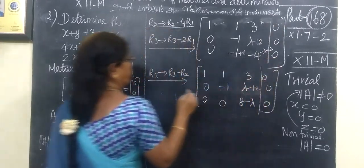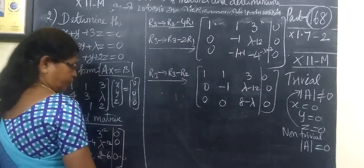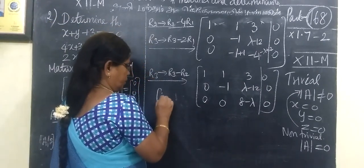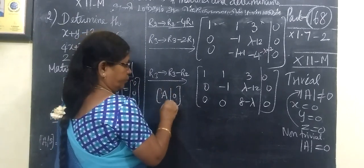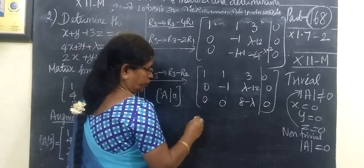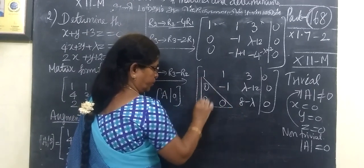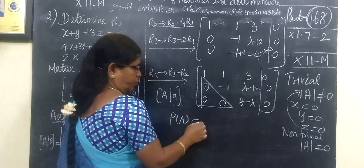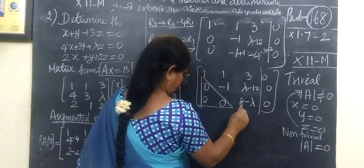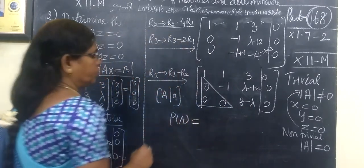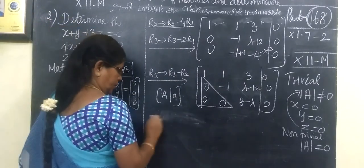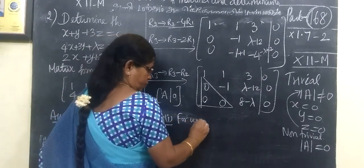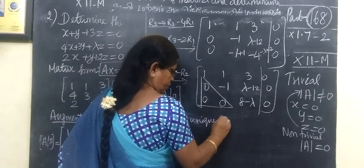For augmented matrix, this is 0. Rho of A equals - this is 0. For unique solution, case 1: unique solution.